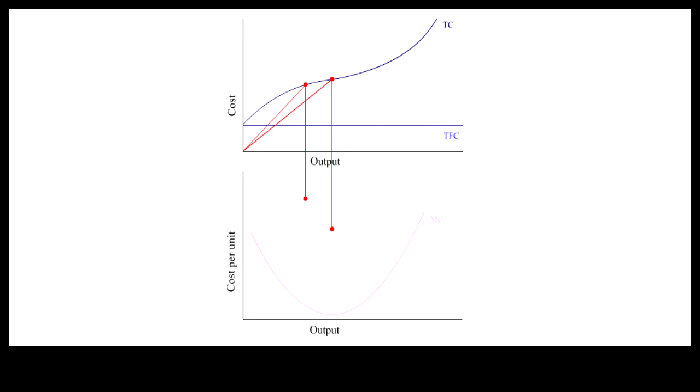Given the inverted S-shape of TC, ATC first decreases until it reaches the point on TC where the ray from the origin is tangent to TC. Afterwards, the slope of rays from the origin to TC starts to increase, giving ATC a U-shape.